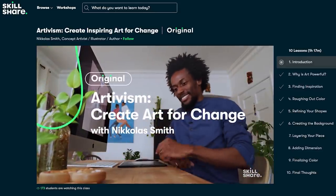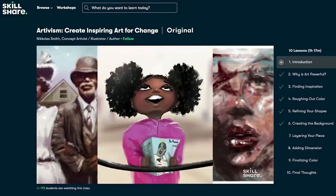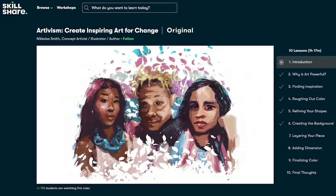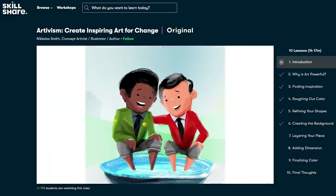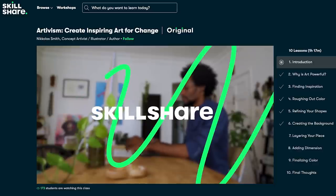With everything that's going on today, a class that was really inspiring to me was Artivism: Create Inspiring Art for Change by Nicholas Smith. Along with teaching you his speed painting method, his class teaches you how to find inspiration, how to translate your reactions into art, how to create art with a clear effective message, and how to connect yourself through art. I think it's very important to use your talent to communicate your message to the world.